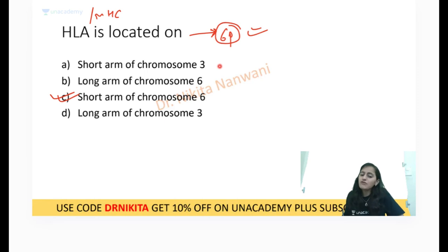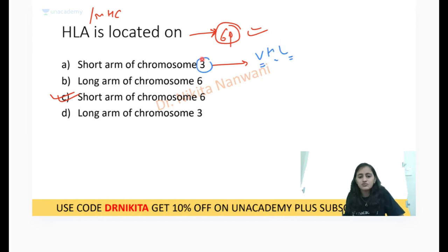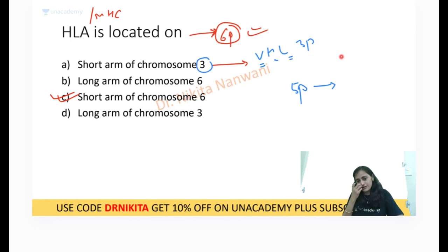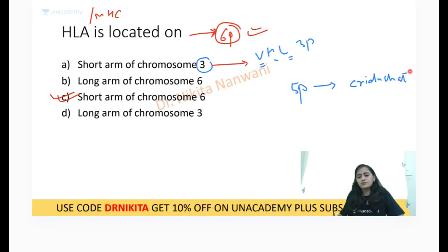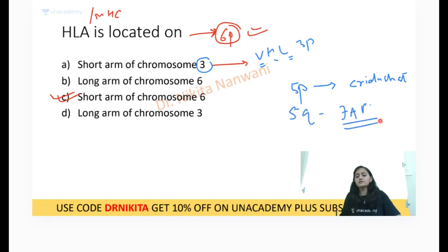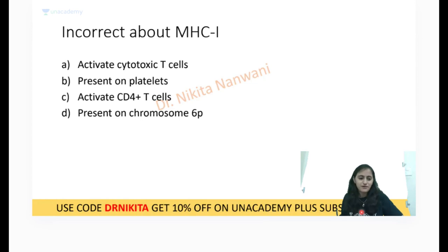What do you have on the short arm of chromosome 3? Absolutely right, Priya — VHL, three alphabets, is on chromosome 3 short arm, 3p. And what do you have on 5p? Yes — cri-du-chat syndrome. FAP is located on 5q — familial adenomatous polyposis, the APC gene is on 5q.